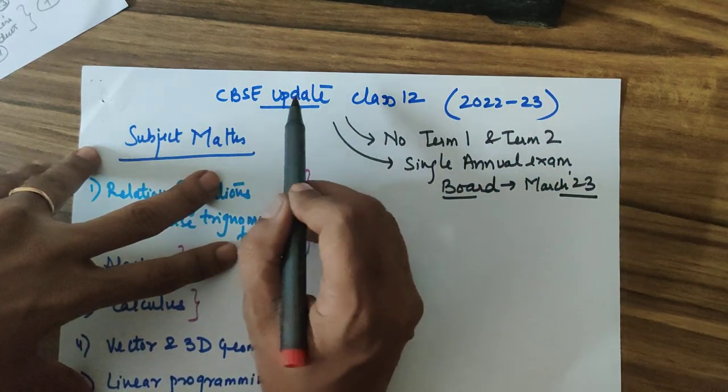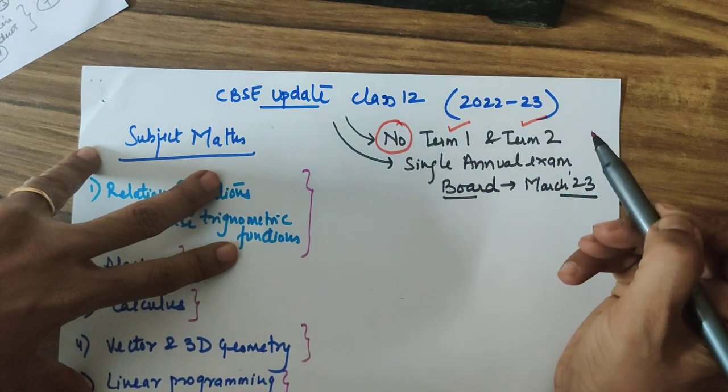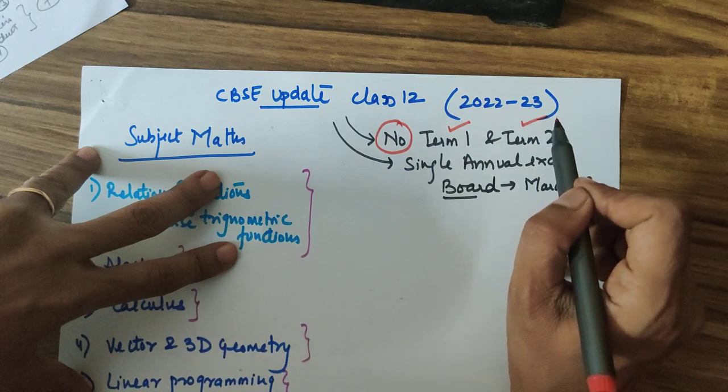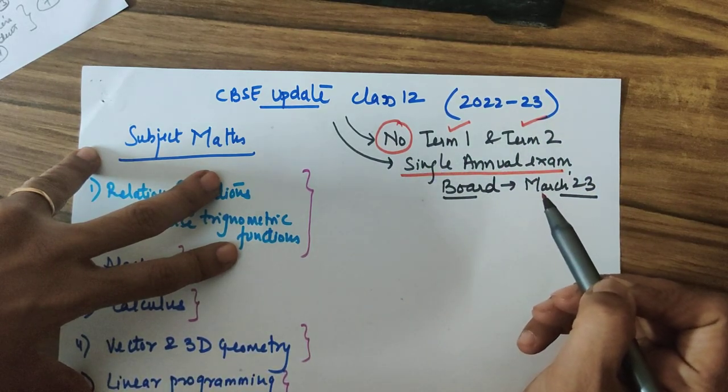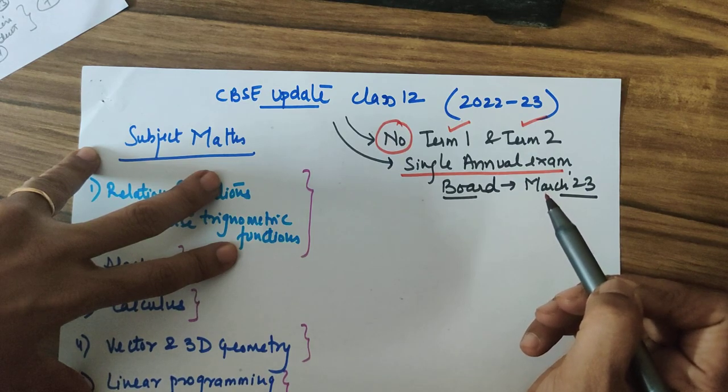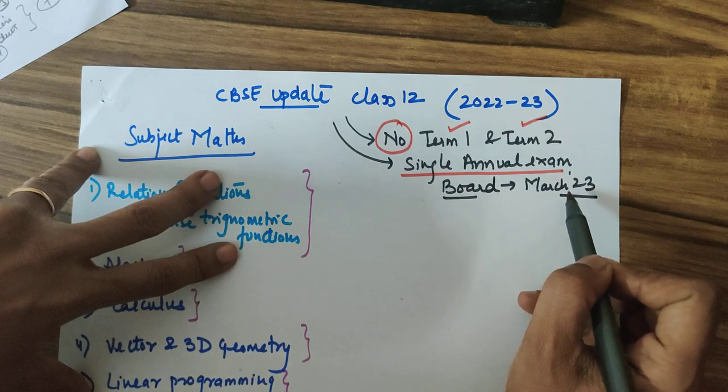The CBSE update as of today is that you will not be having any term 1 or term 2 examination this year. CBSE will be holding only one examination, a board examination which will be your single annual examination at the end of your total syllabus done this year, which is roughly around March 2023.